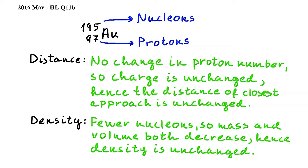In order to earn both marks on this question, when you write about distance, you should include a reason why it remains unchanged. So for example, state that there is no change in proton number or that charge is unchanged, and add that this means that the distance of closest approach is also unchanged.